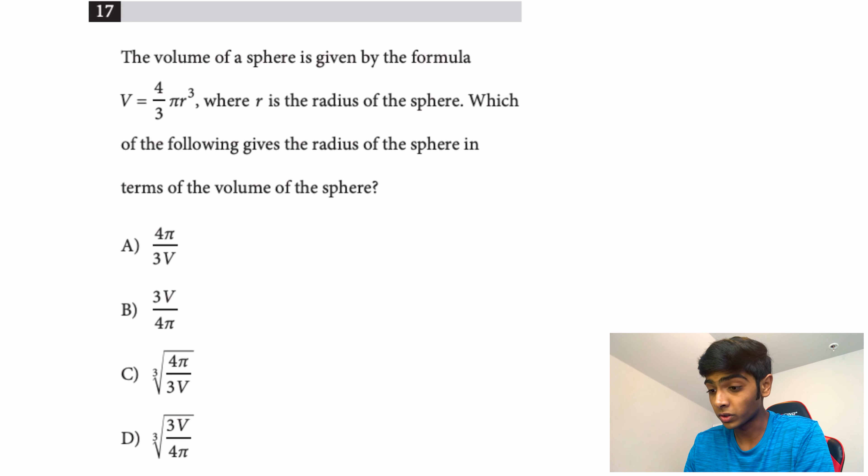Now let's go on to number 17. The volume of a sphere is given by the formula V = (4/3)πr³, where r is the radius of the sphere. Which of the following gives the radius of the sphere in terms of the volume?